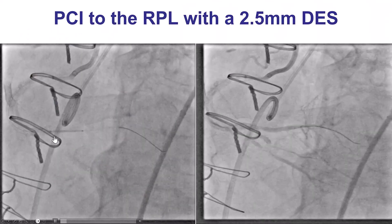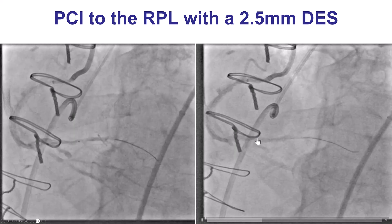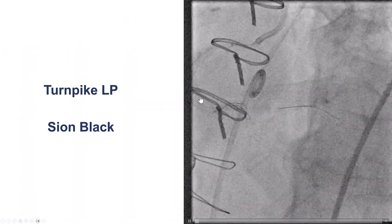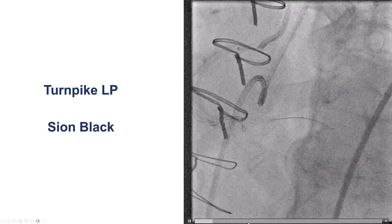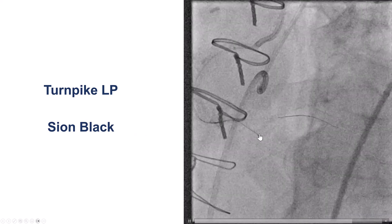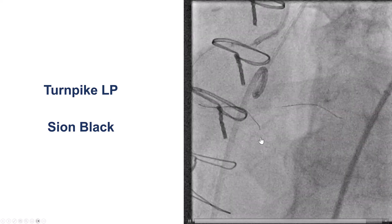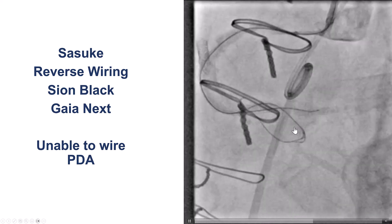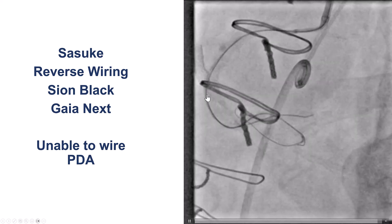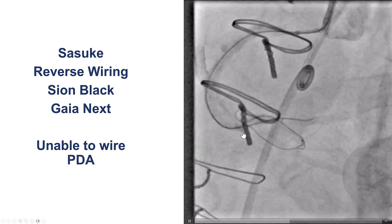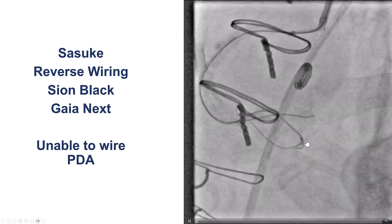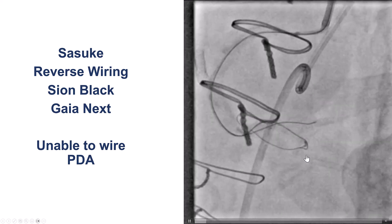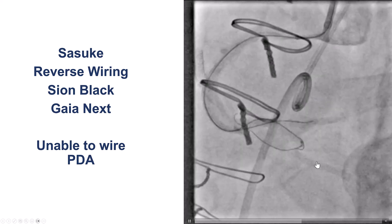The problem was the PDA. The posterolateral was easy to wire and stent. However, we were unable to advance a guide wire into the PDA. We tried with a microcatheter, polymer-jacketed guide wires, and a Sion Black wire. We were able to get to the area of disease, but the wire would not cross despite having the microcatheter. We tried several things including the reversed wire technique and putting a loop into the occluded graft, but the bend was too much and there was disease within a previously placed stent into the PDA. So the PDA could not be wired.